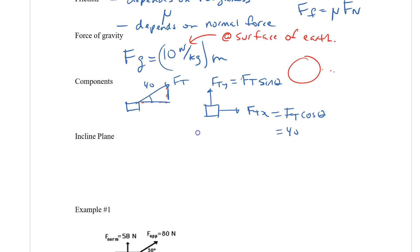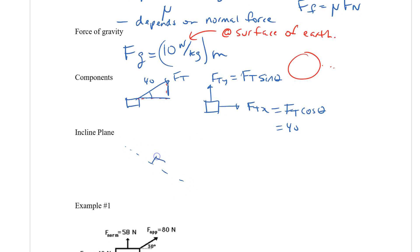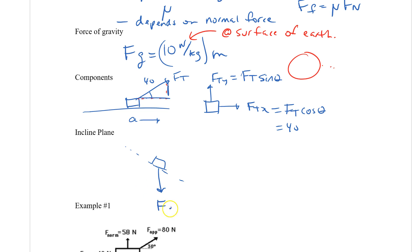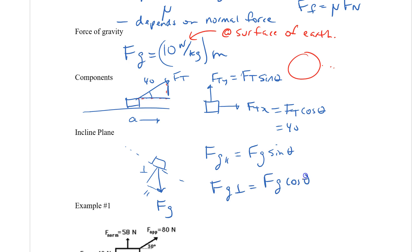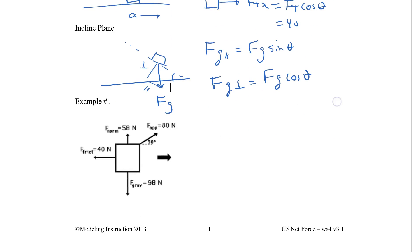For incline planes, we need to draw components differently. Any acceleration is parallel to the plane, so the odd force out is gravity. We convert gravity into perpendicular and parallel components: FG parallel equals FG times sine of theta — the parallel symbol looks like a slide — and FG perpendicular equals FG times cosine of theta, where theta is the angle of the incline.